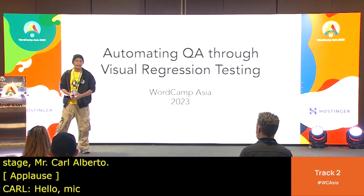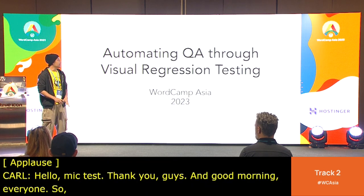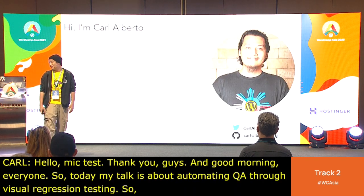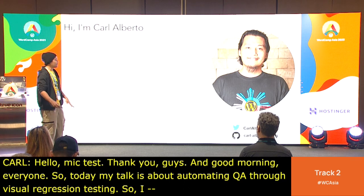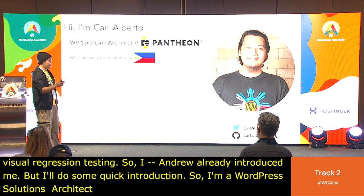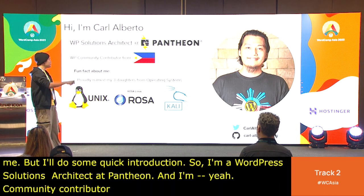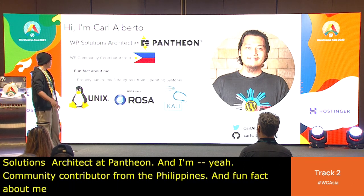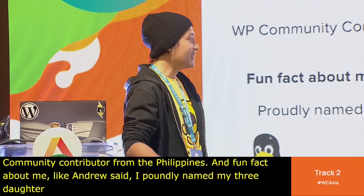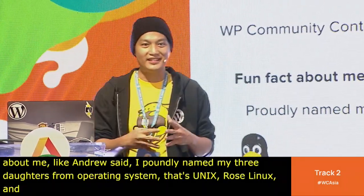Good morning everyone. Today my talk is about automating QA through visual regression testing. I'm a WordPress Solutions Architect at Pantheon and a community contributor from the Philippines. Fun fact: I proudly named my three daughters after operating systems — Unix, Linux, and Kali — and ironically my wife's name is Mac, so they all jive together.